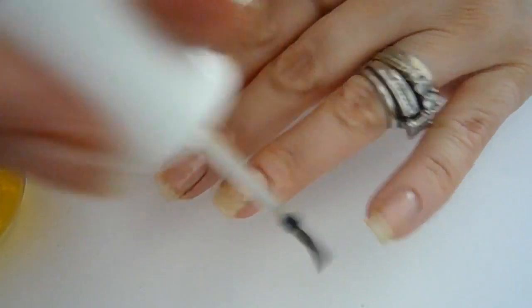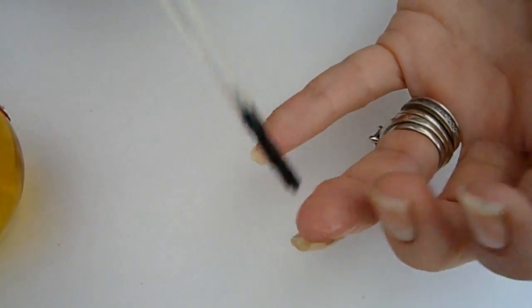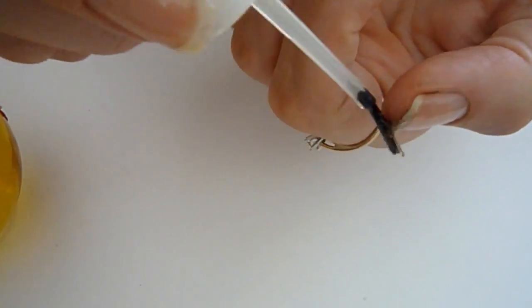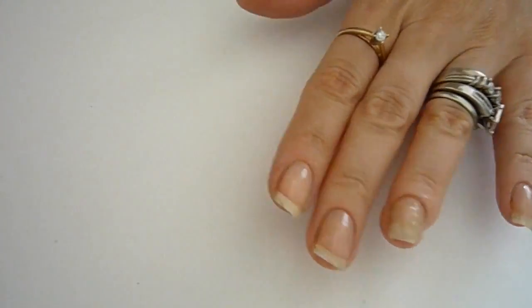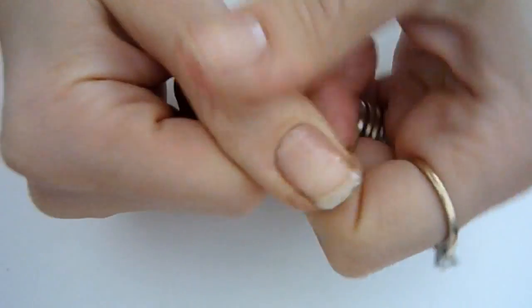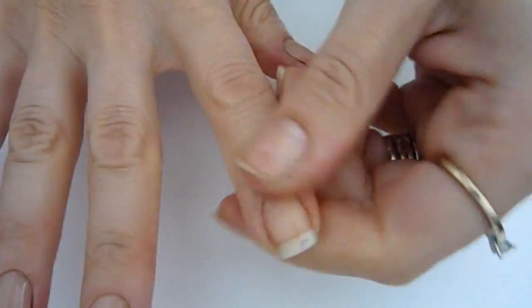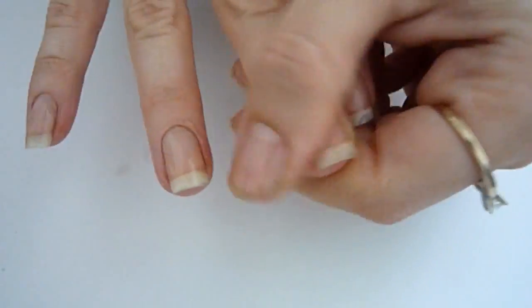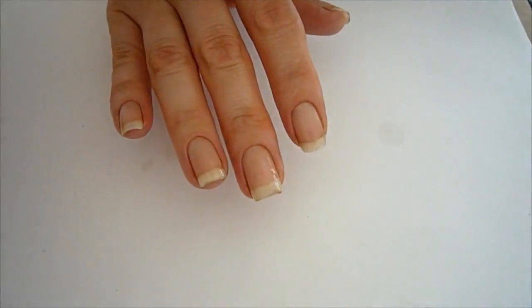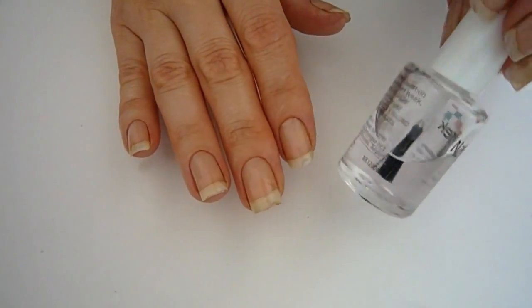If you're gonna do a nail design or put nail polish on again you want to let it sit for at least 10 minutes. Make sure that you rub it into the cuticles like this, this also helps with the circulation.